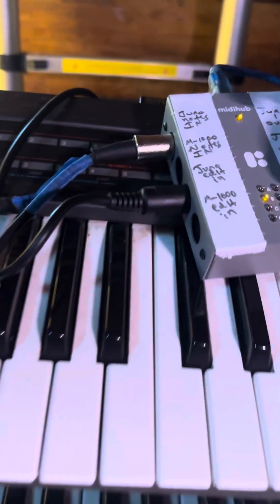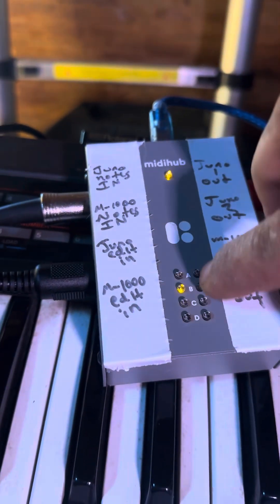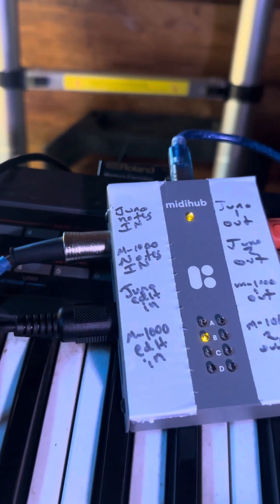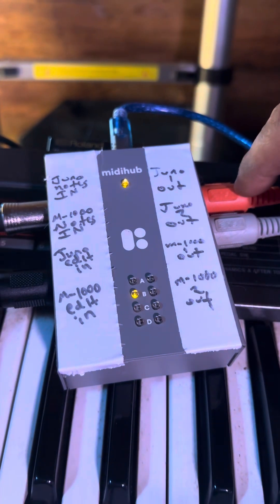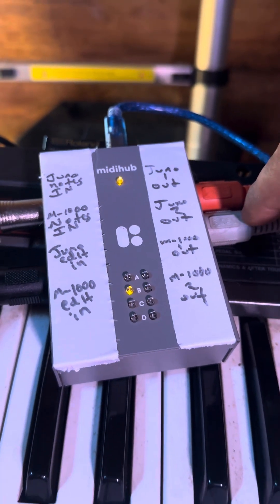Notes are coming in there and they're getting parsed to the A and the B output. A output goes to the Alpha Juno 1, B output goes to Alpha Juno 2.